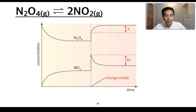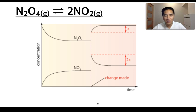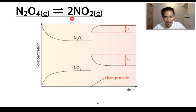This can only occur in one circumstance — decreasing the volume that these gases were contained in. If we decrease the volume, this is going to increase the concentration of both gases. We can also see that NO2 has increased by twice the amount of N2O4, which is given by the mole ratio.